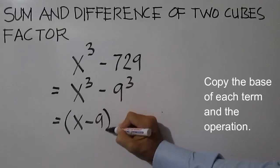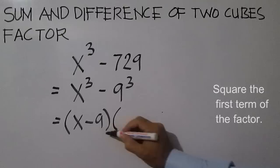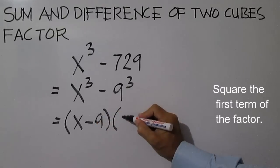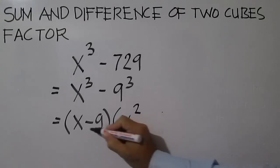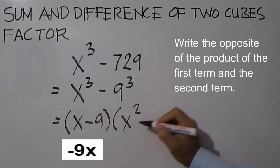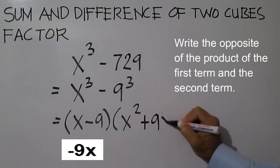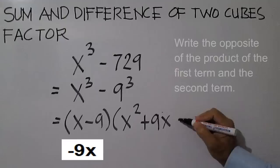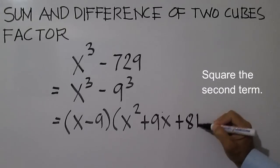Using this factor, square the first term. x times x is x squared. Multiply the first term and the second term: negative 9x. Then write the opposite of the product. Then square the second term: negative 9 times negative 9 is 81.